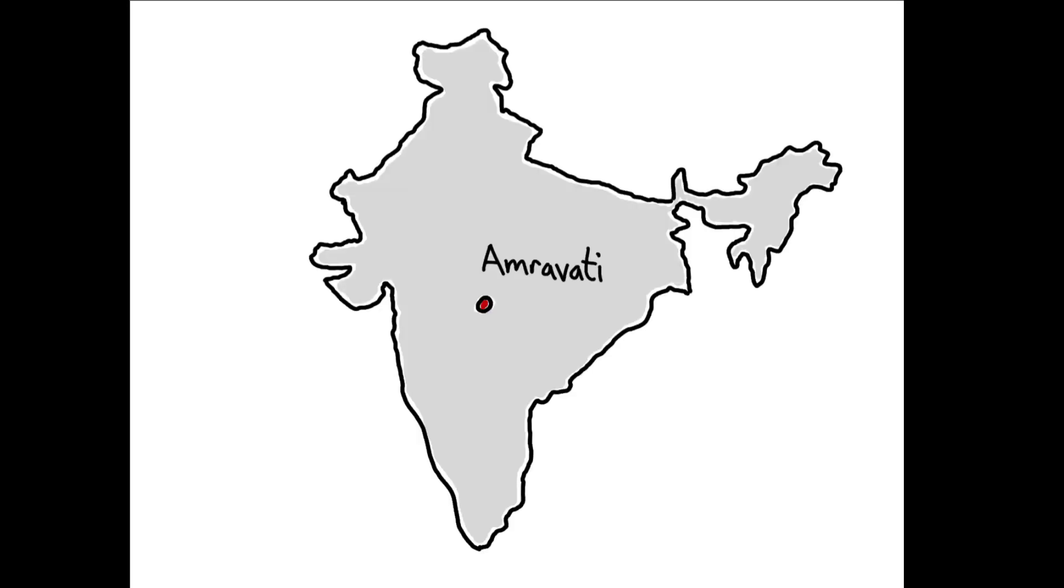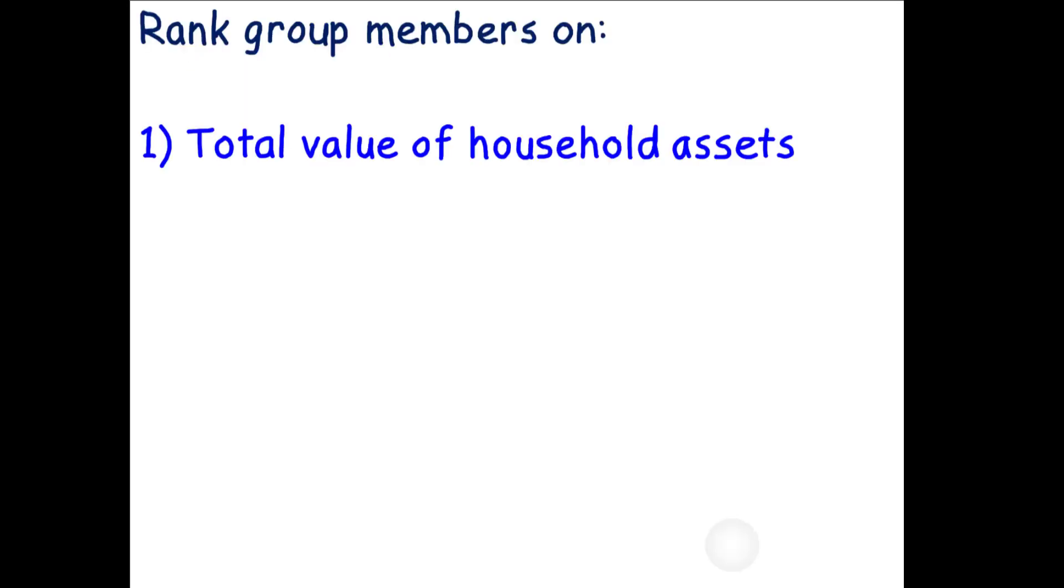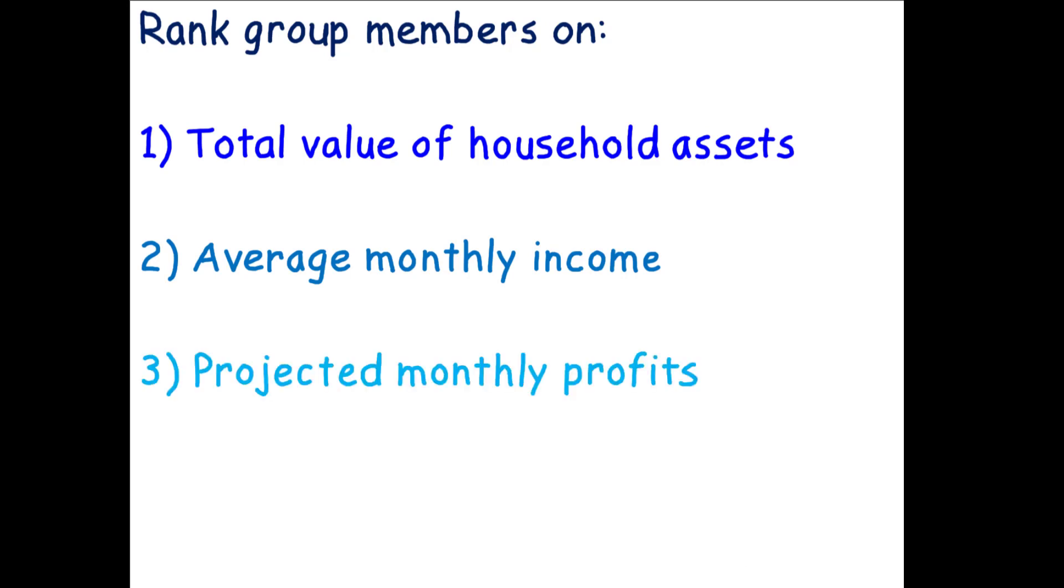To shed light on these questions, the authors conducted a randomized controlled trial with 1,345 entrepreneurs and their neighbors in Amravati, India. After administering a baseline survey, entrepreneurs were divided into groups of four to six based on geographic proximity and asked to rank themselves and their group members on several characteristics, including total value of household assets, average monthly income over the past year, projected monthly profits, and predicted marginal return to capital.